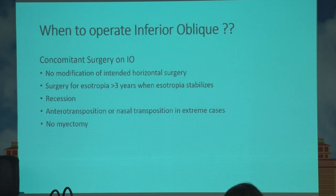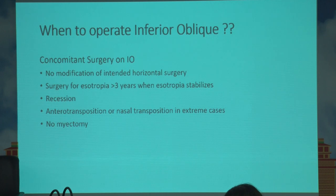No modification of horizontal surgery amounts is required when combining with inferior oblique surgery — the horizontal surgery amounts are decided based on the isotropic deviation. Myectomy is preferred because we cannot grade the myotomy, and in extreme cases of very large-angle primary inferior oblique overaction, one can even consider a nasal transposition.